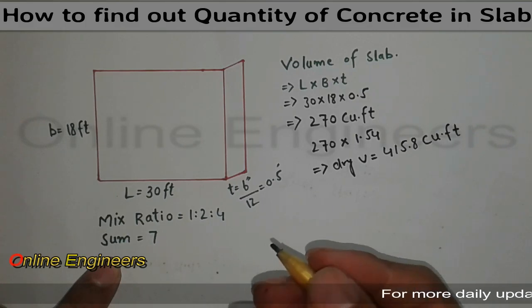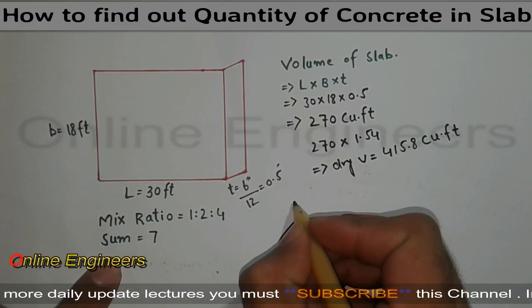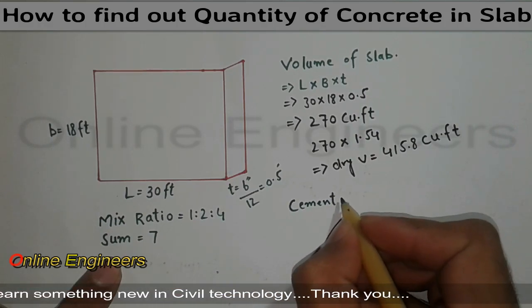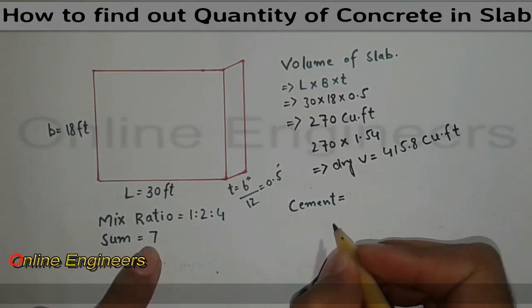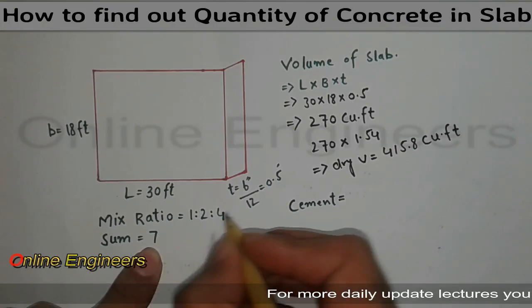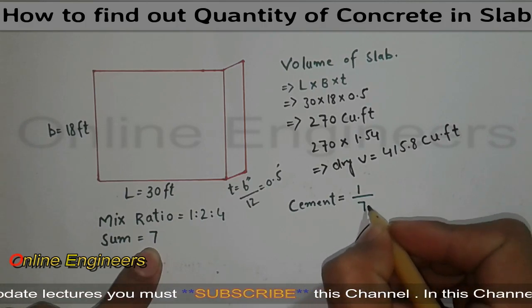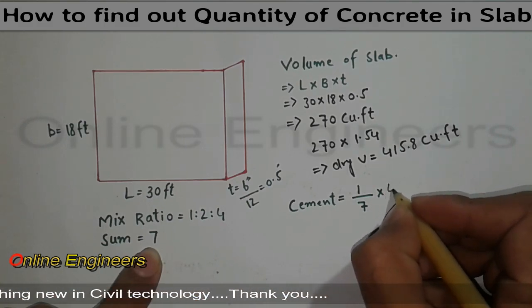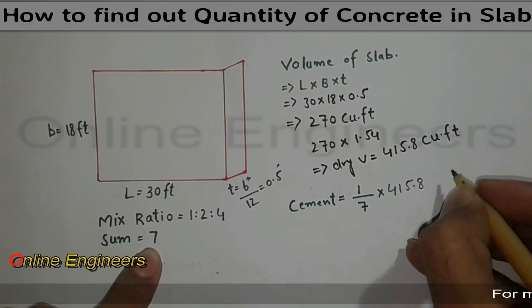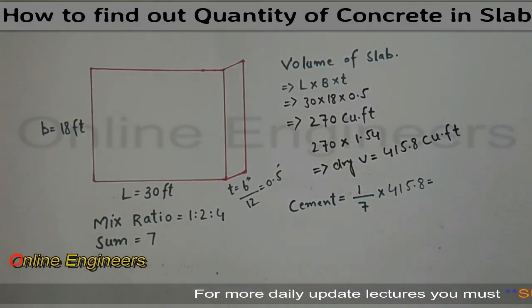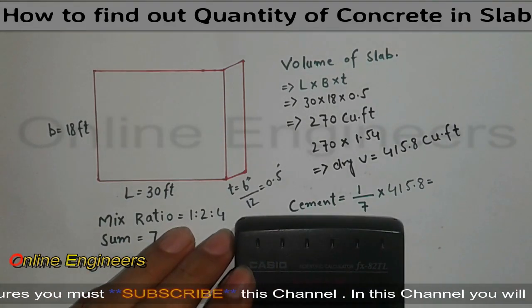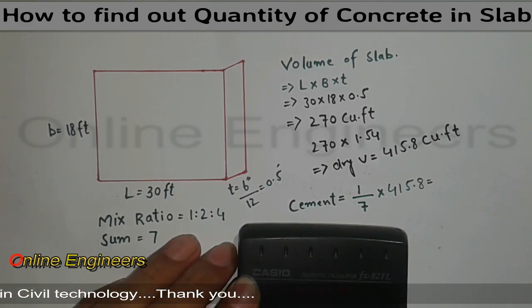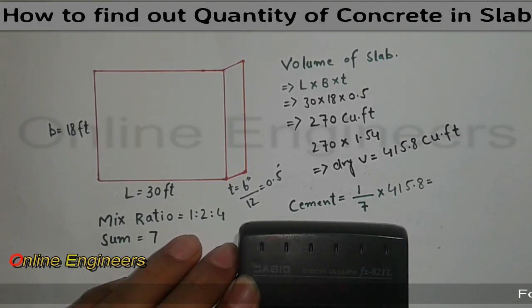Now I want to find out quantity of cement. We have the ratio for cement is 1, also we have the sum, and multiply by volume of slab. It is equal to 1 divided by 7 and multiply by 415.8. It will give you the answer.